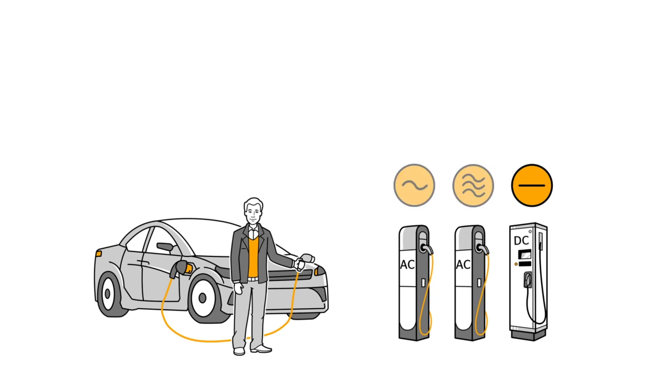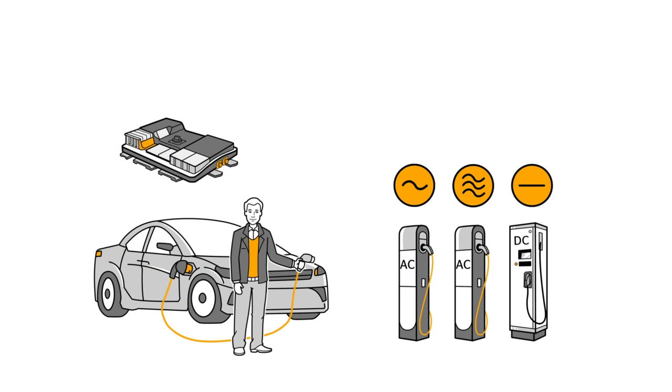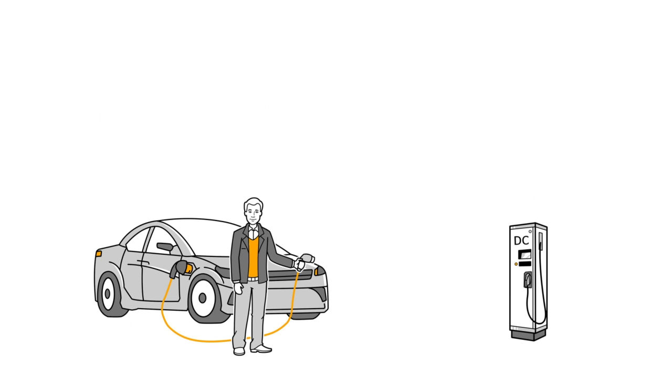AC stands for alternating current. That's the kind of electricity David gets from his power sockets at home. But the batteries in electric vehicles need direct current or DC. So electric cars come with a charger that converts alternating to direct current. But these chargers often have limited performance to save space and expense. That's why it takes longer to charge at an AC station than a DC station, which supplies the car with the current it needs directly and rapidly. Because DC stations contain expensive integrated technology, they are less common and mostly located near highways.